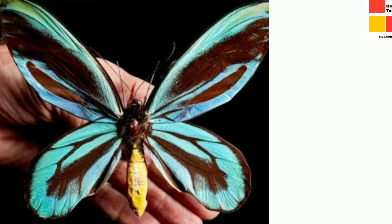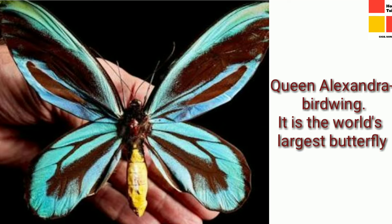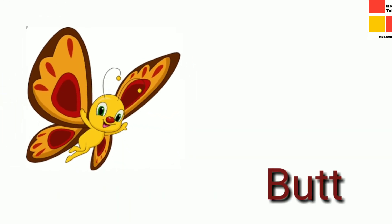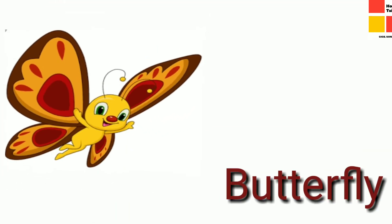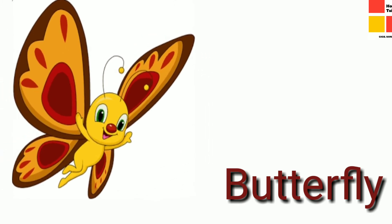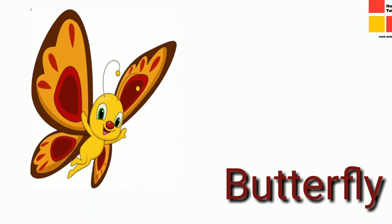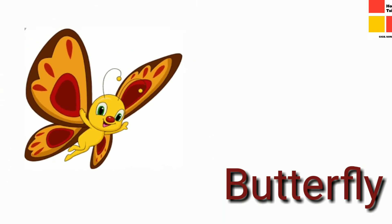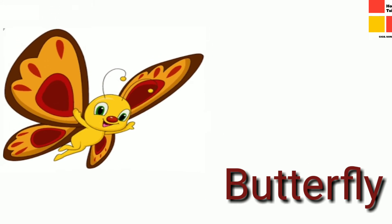Children, see this picture. This butterfly is called the Queen Alexandra Birdwing, and do you know, this is the world's largest butterfly. Now let's read the spelling of butterfly. Read out: B-U-T-T-E-R, butter, and fly is spelled F-L-Y, fly. So when we read together, it becomes butterfly.